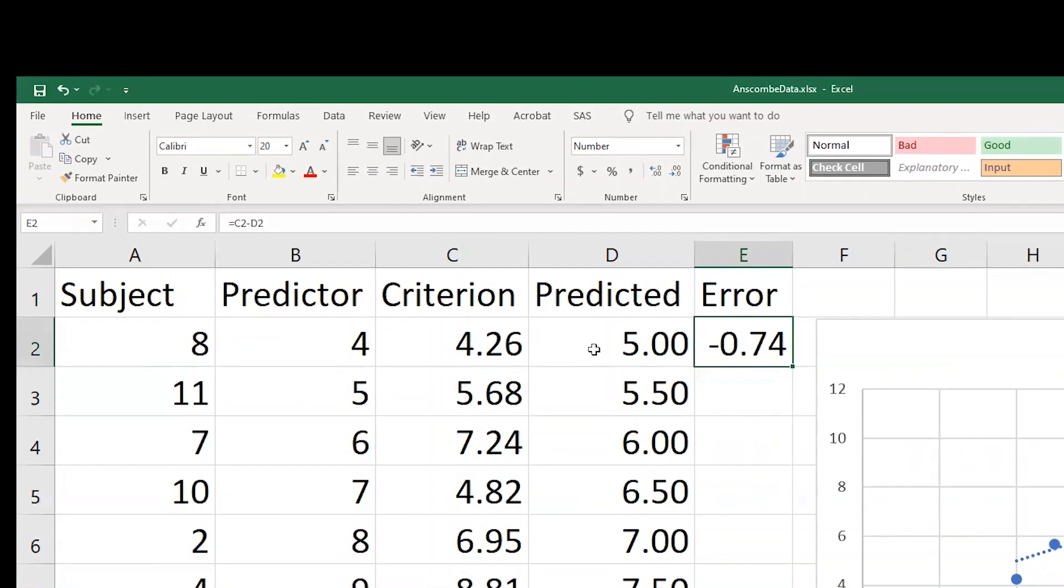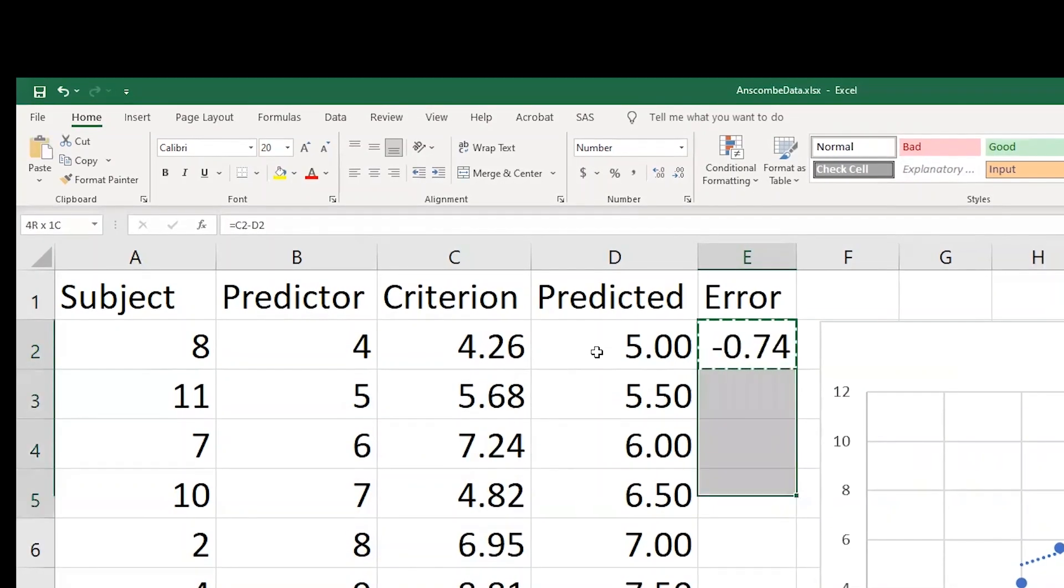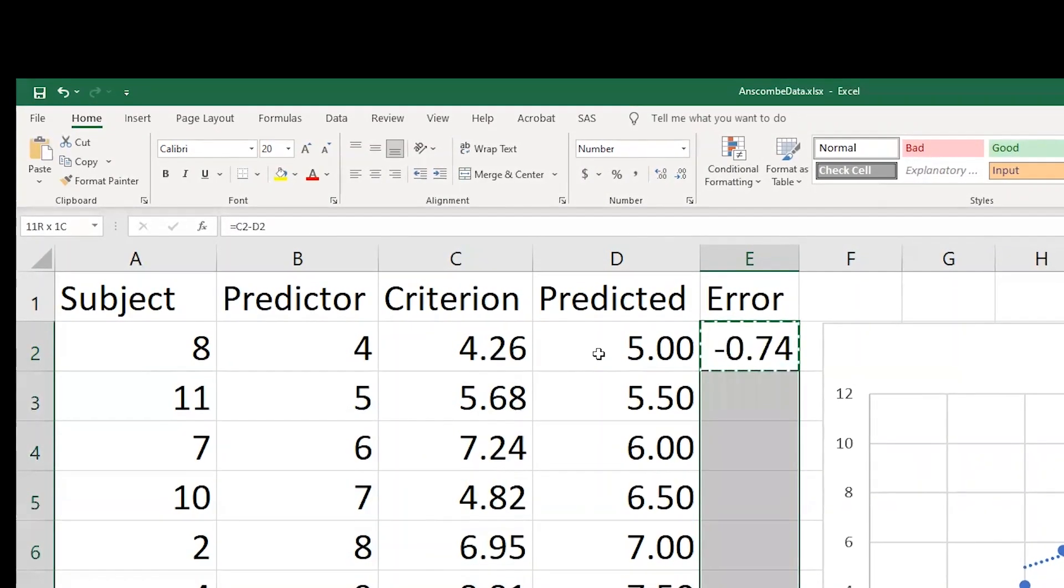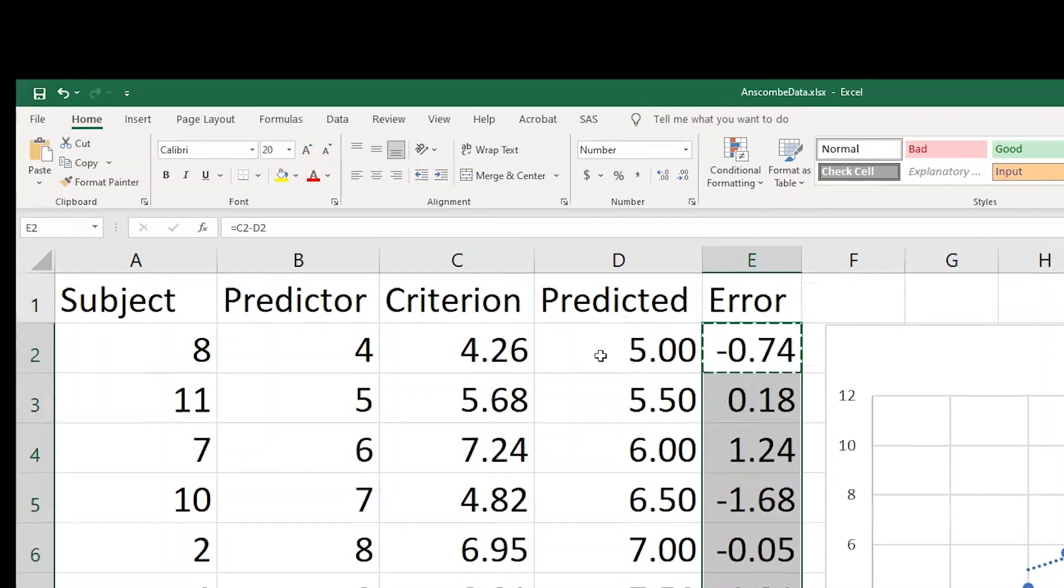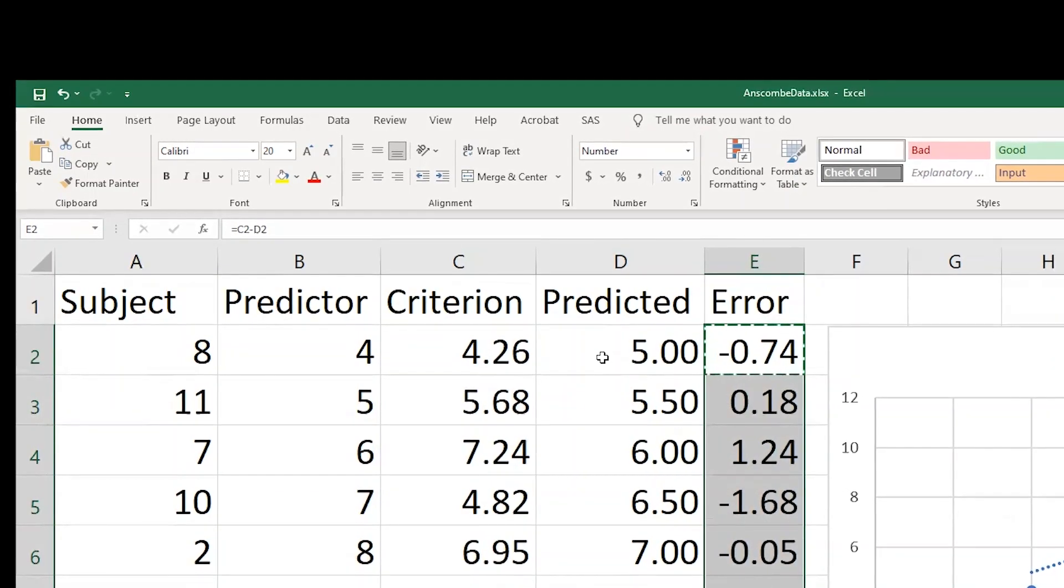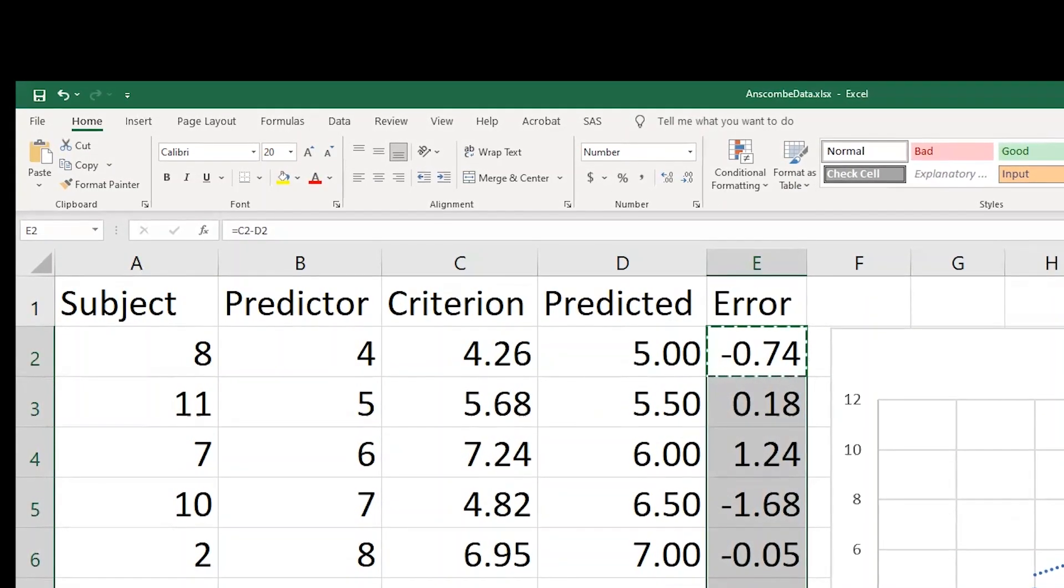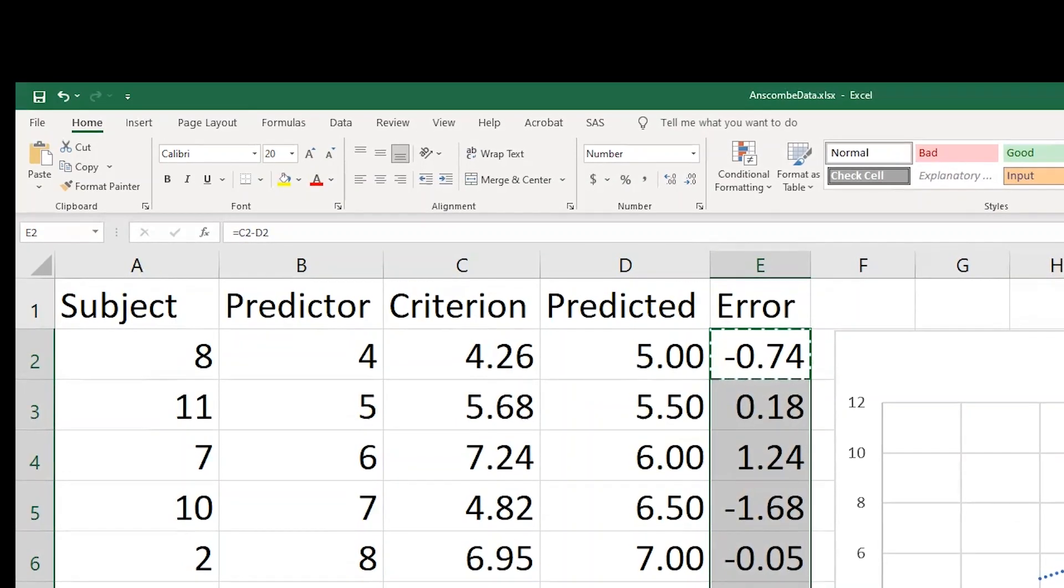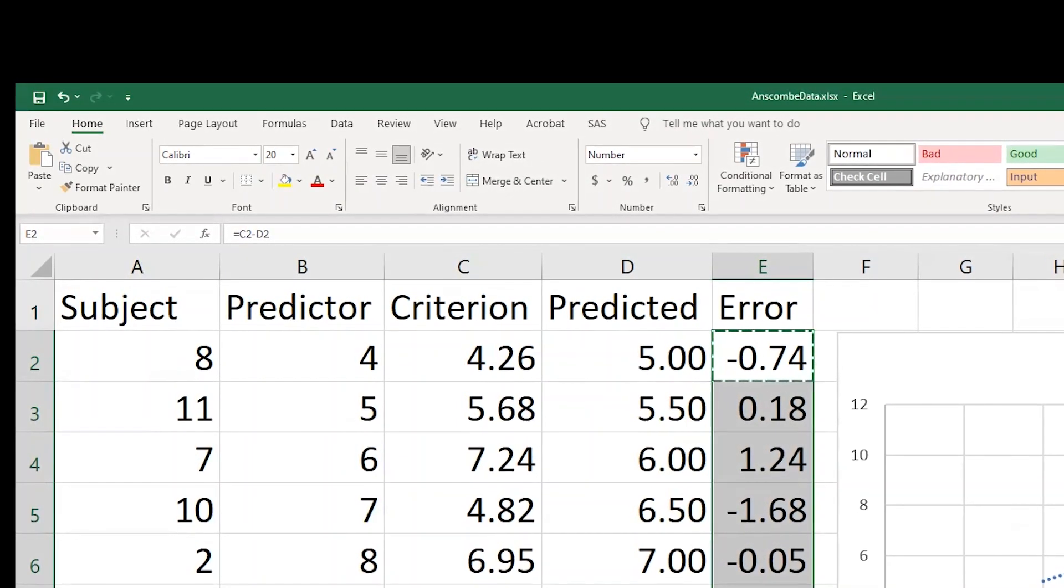And in the same fashion, if I want to calculate the errors of prediction for everybody, I can control C and control V that and look at all of those numbers. Positive numbers indicate that the person scored above the predicted value. Negative numbers indicate they fell below.